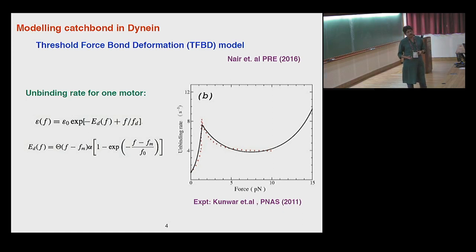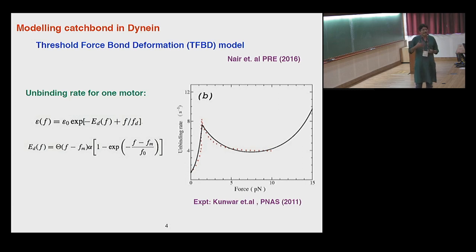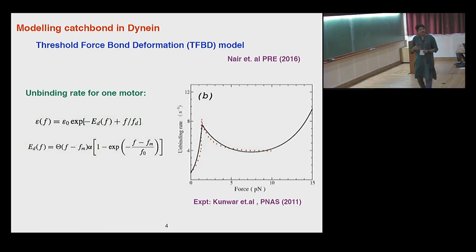Now that we have modeled catch bond, the question of interest is how this catch bond in individual motors manifests in different properties. First, how does it manifest in the context of transport properties of cellular cargo being transported inside the cell? I won't discuss that in detail, but I'll flash the result briefly, and then focus on the implications for the mechanical stability of cytoskeletal structure within the cell.